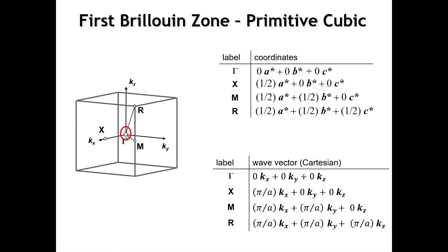X is one-half of the a* lattice vector. M is one-half of the a* and b* lattice vectors. We encountered those same special points in our two-dimensional square lattice. And now we have one additional one, the R point, which is one-half of all three reciprocal space lattice vectors.